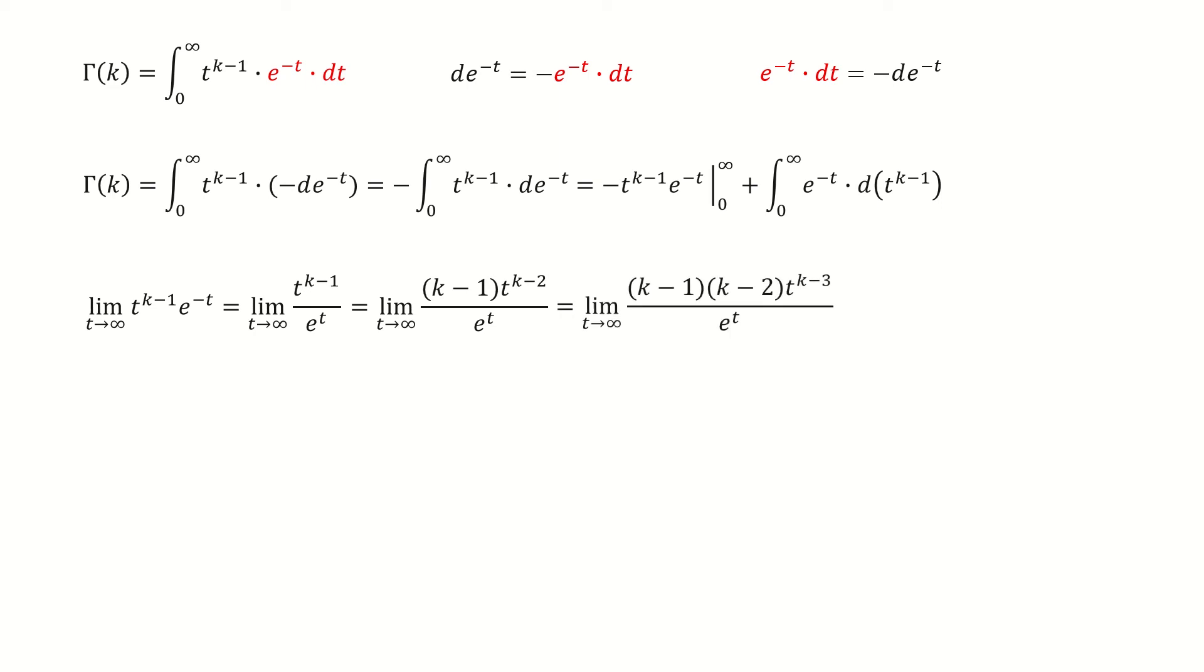After we do the derivative, it's still infinity over infinity form, so we still do L'Hôpital's rule and keep going until it exhausts all the powers in the numerator. You can see the numerator is just equal to k minus 1 factorial, but the limit is still equal to 0. So this term vanishes.